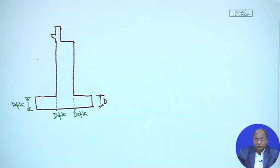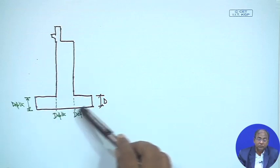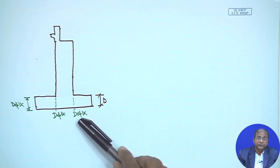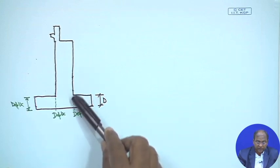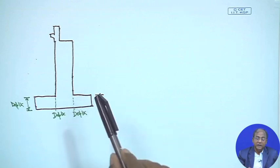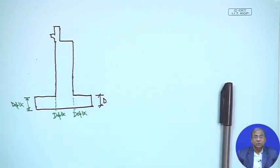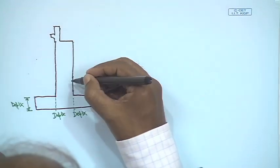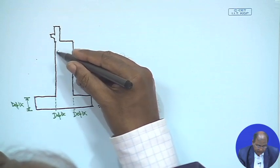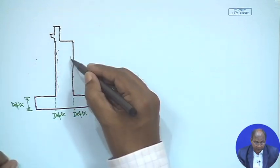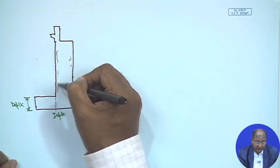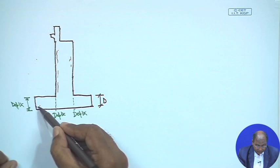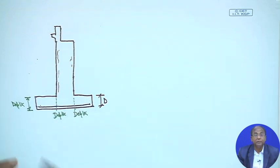We can find out the different depth here. As usual, we have the upward pressure, and we can find out the bending moment and shear force. At this section we can find out the depth. Similarly, at the stem we can find out the reinforcement — we can provide reinforcement here since the earth is on this side, and also reinforcement here.